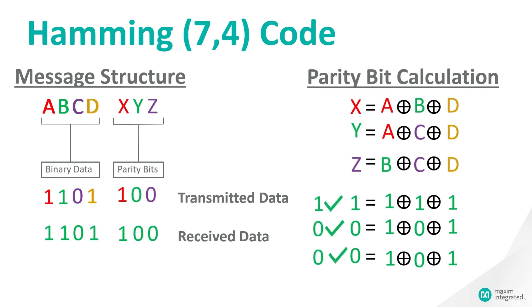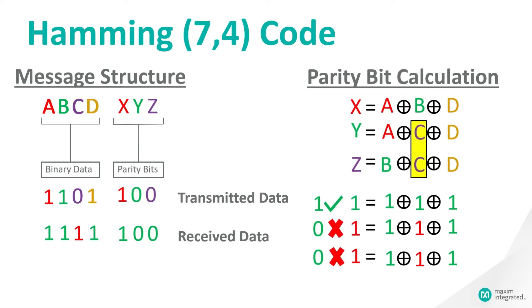Now let's say that there was an error during the transmission. By going back to the incorrect parity bit equations we can see that both of them contain the C bit from the transmission data. That means the C bit was most likely flipped during the transmission, and we know we need to change it back to a 0 in order to recover the intended transmission. The common rule is: if multiple parity bits are flipped, check the common data bit used to calculate them. If only one parity bit is flipped, that parity bit itself was most likely flipped during transmission and you can go ahead and ignore it.